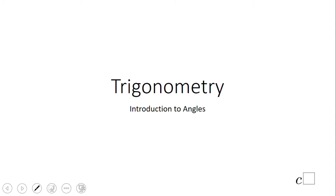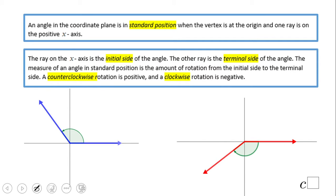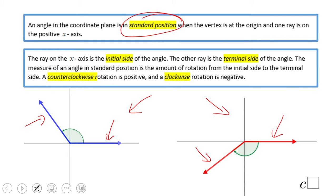Welcome back to C-Square. In this video clip we're going to take a look at angles in trigonometry. What is different in trigonometry compared to geometry? We arrange the angle in what is called standard position, where we have an initial side and a terminal side. The initial side is on the x-axis and the terminal side can be anywhere.